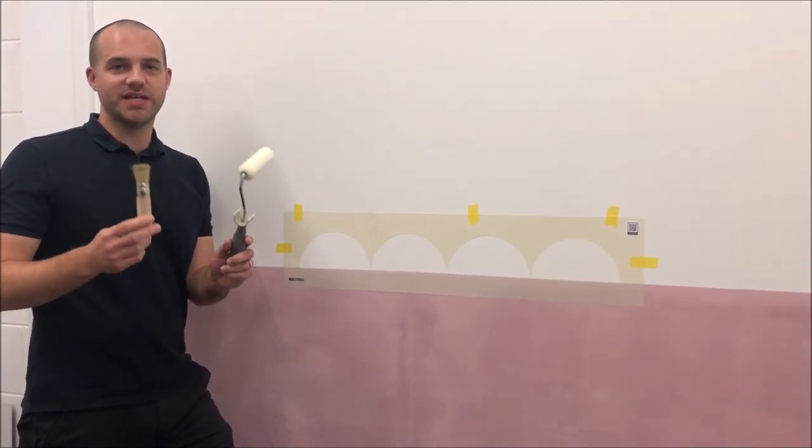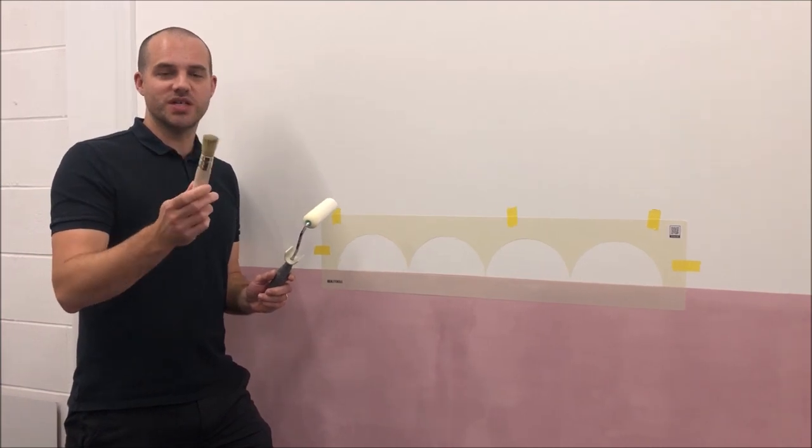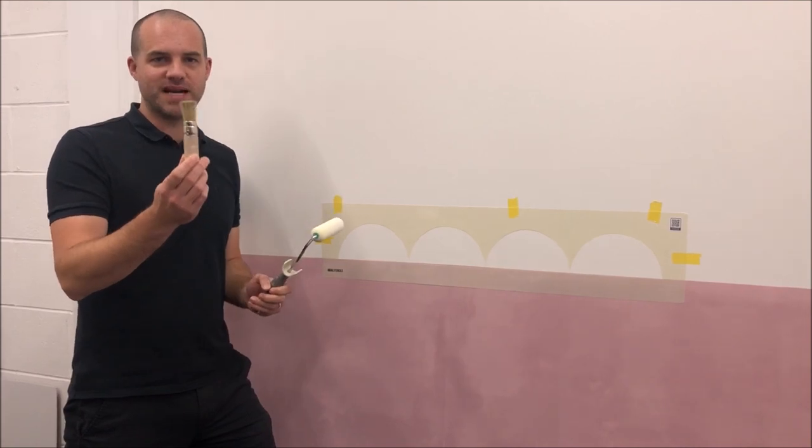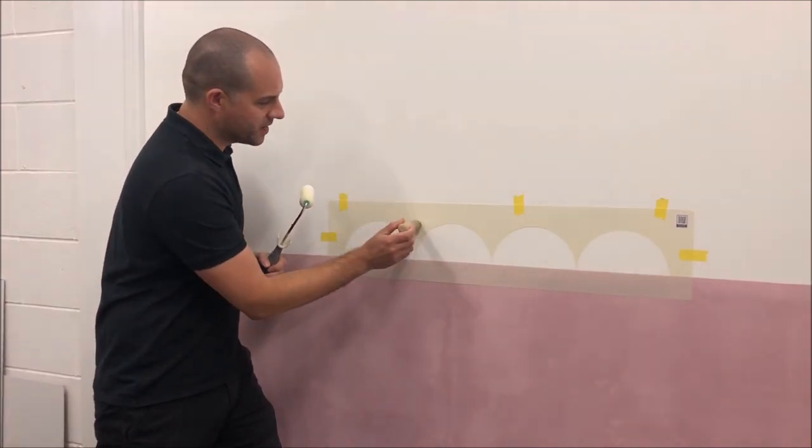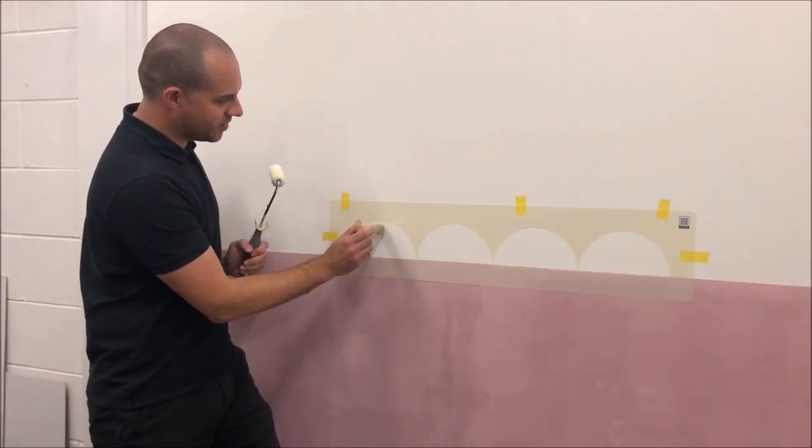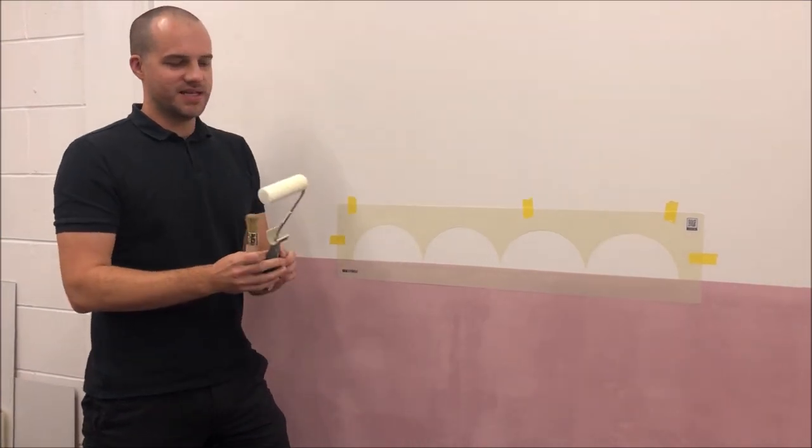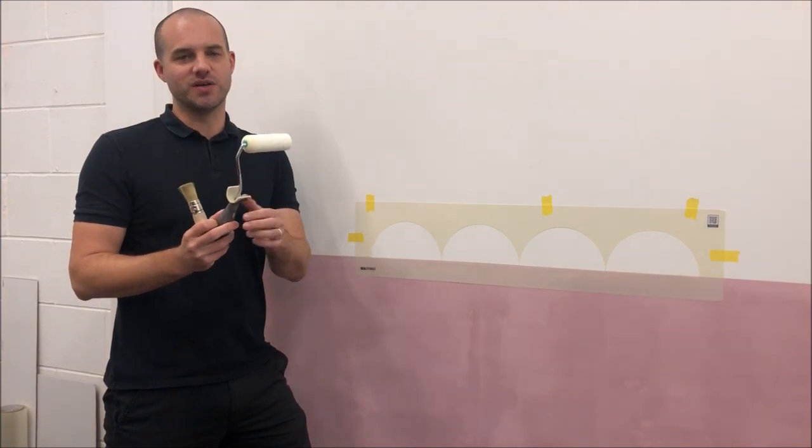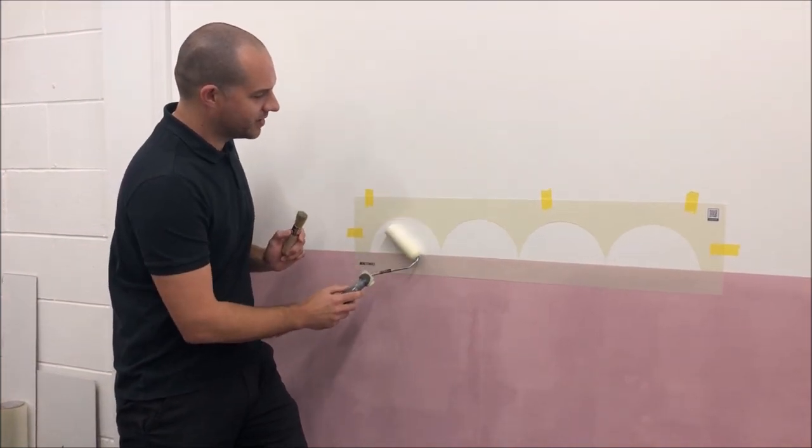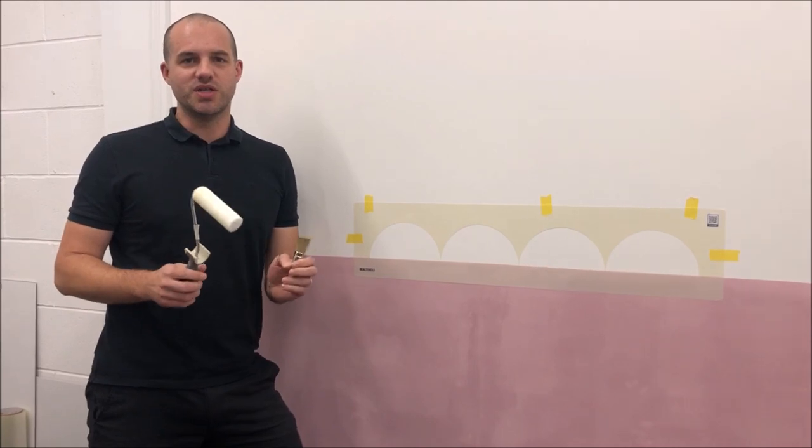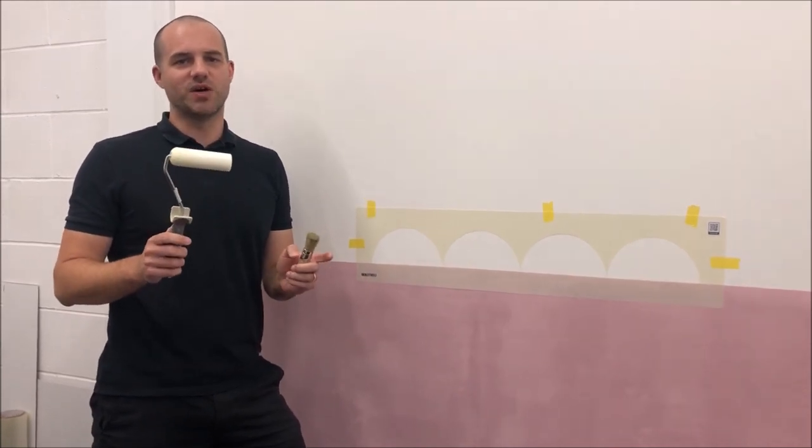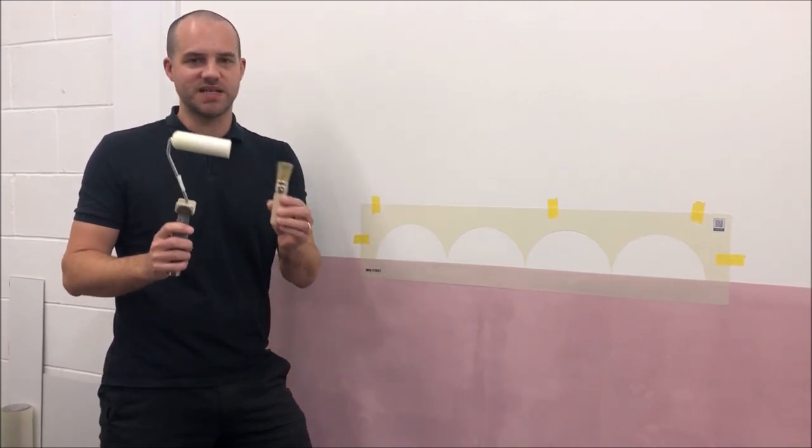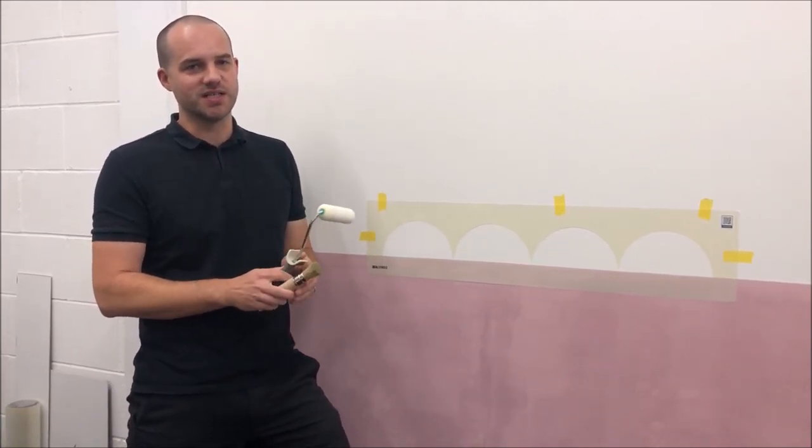I'm going to talk about the two tools you need for stenciling. You want to use a proper stenciling brush, which is like this with a flat head and stiff, packed bristles. You use it to pounce the paint through the openings of the stencil. This is a dense foam roller, also known as a gloss roller, that you can use for rolling through your stencil. You don't want to use an ordinary painting roller or normal paintbrush. You need these specifically for stenciling, otherwise you won't get a good result.